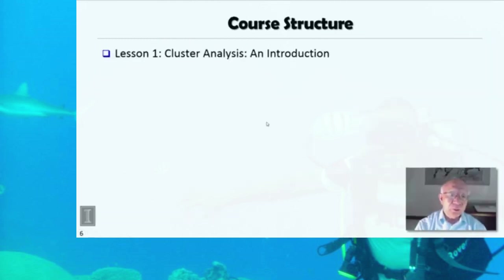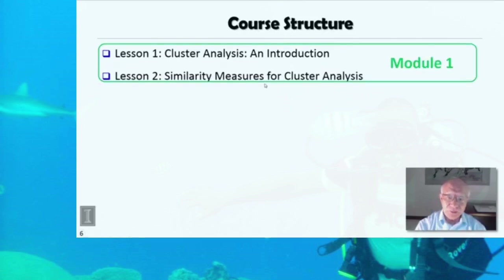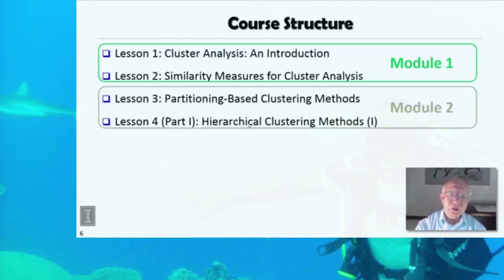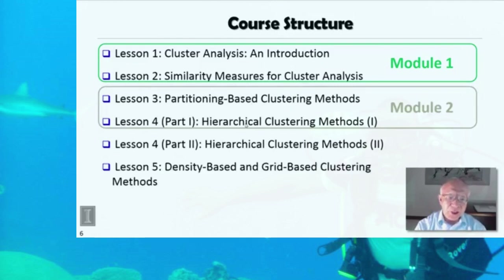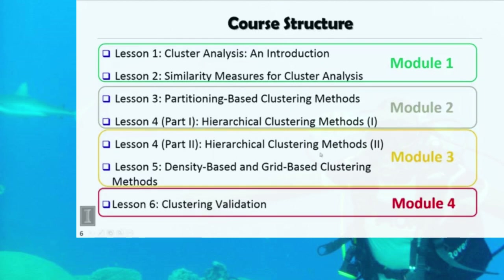For the course structure, we will have six lessons. Lesson one is Cluster Analysis Introduction. Lesson two is Similarity Measures for Cluster Analysis. These two lessons form the first module, module one. Then lesson three, partitioning-based clustering methods, and part one of lesson four, hierarchical clustering methods part one, form the contents of module two. Then part two of lesson four, hierarchical clustering methods part two, and lesson five, density-based and grid-based clustering methods, form the contents of module three. Finally, lesson six, clustering validation, forms the material for module four.